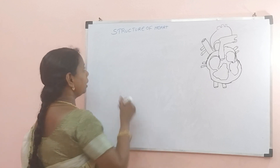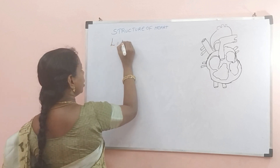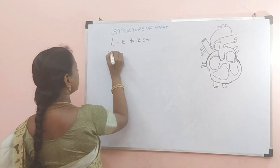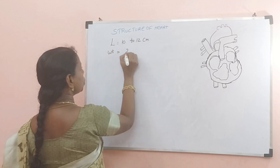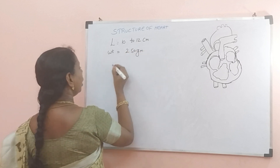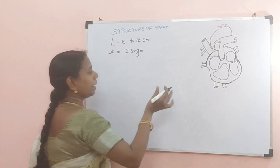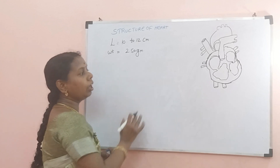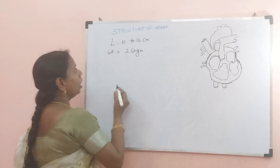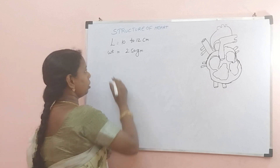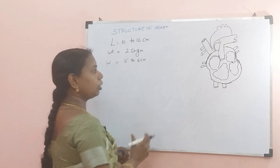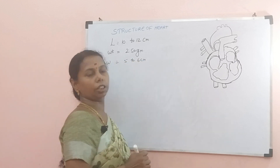What is the length of our heart? It is around 10 to 12 centimeters, and the weight is around 250 grams on an average. Though it is 10 to 12 centimeters, it is slightly tilted towards the left hand side — about 9 centimeters. The width will be around 5 to 6 centimeters, and it is tilted towards the left side.